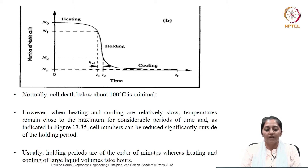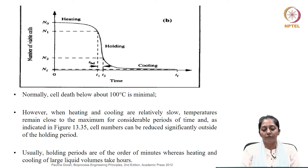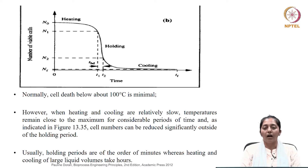Cell death below 100 degrees C, assuming these are all aqueous solutions, is minimal. However, when the heating and cooling are relatively slow, temperatures remain close to the maximum for a considerable period of time. As indicated in the figure, cell numbers can still be reduced significantly outside the holding period. Usually, holding periods are of the order of minutes whereas heating and cooling of large liquid volumes can even take up to hours.